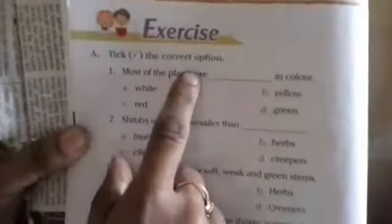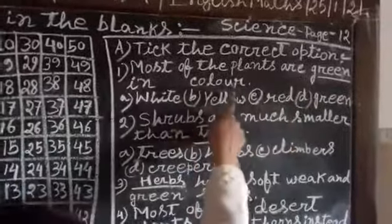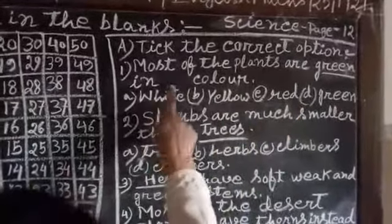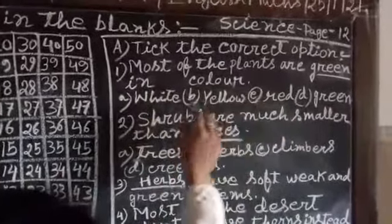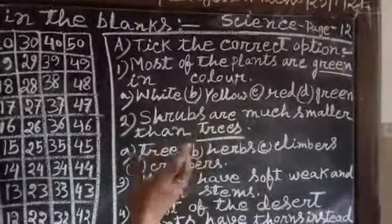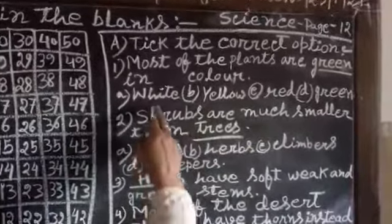The exercise is tick-the-correct option. Those in colours are smaller than those in the other colour.